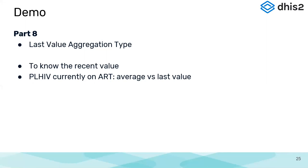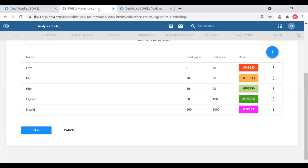There are a few aggregation types like sum, average, count - and 'last value' is also one of them. This is important when we want to know the current value, not the total aggregated value. For example, PLHIV currently on ART - patients living with HIV who are currently on ART. We can see that in a table using 'last value' rather than aggregating values for the last few months. I'll show you how to do that in the demonstration. First we'll see how that form is configured - if you go to data entry, the HIV monthly form.